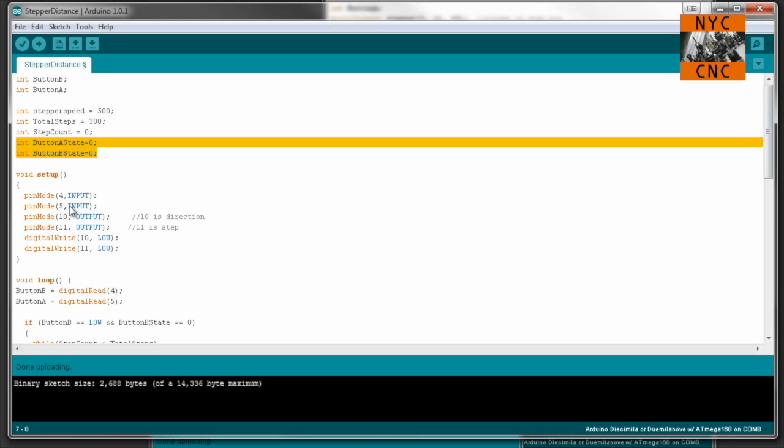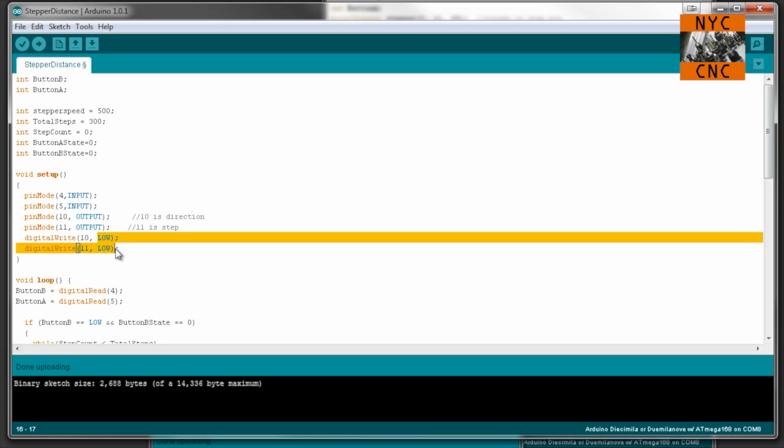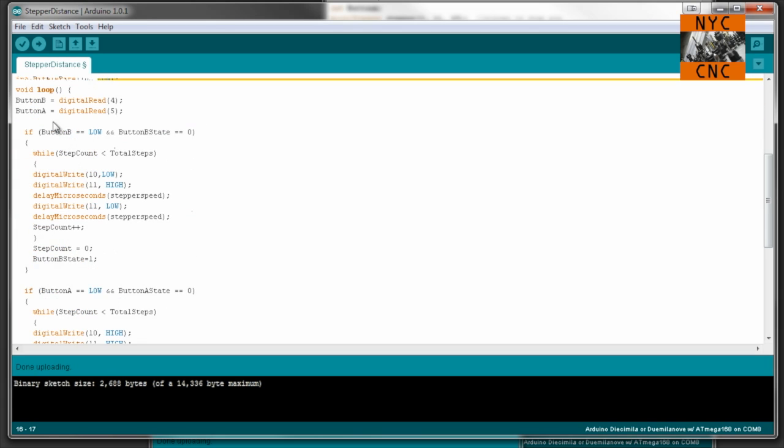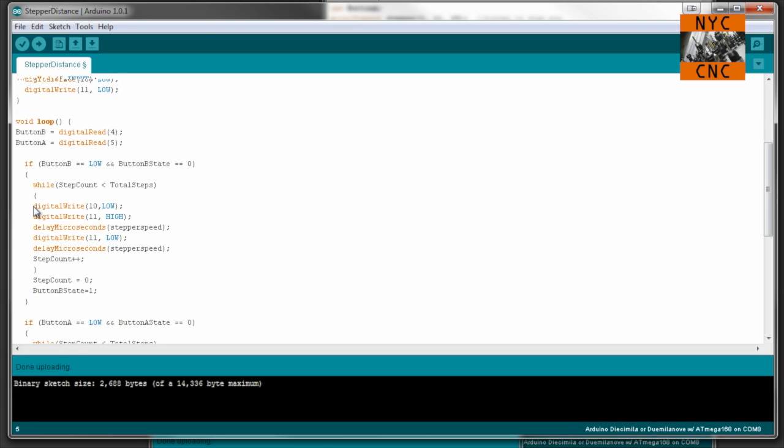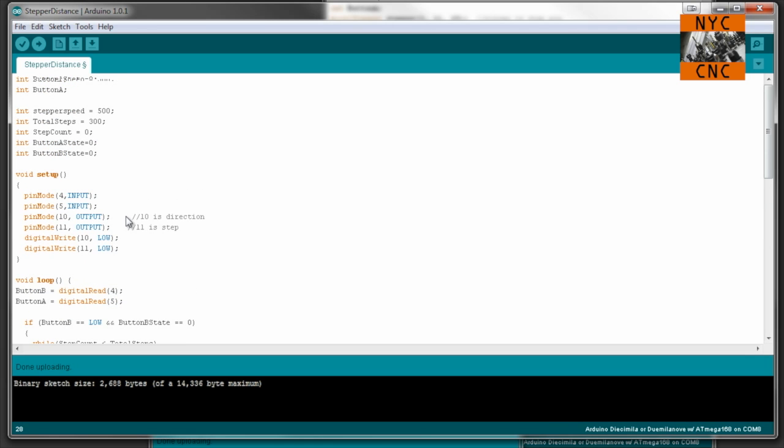Pin modes, four and five are inputs. That's because they're buttons. We're using them as inputs. 10 and 11, 10 is our direction, 11 is our step. They're outputs. And we start them low. So our Arduino loop, each time we loop through, we're reading the button A and B to see if the pin has been read and the button is low. These are low when they're pressed by the way. So when you push button B, it goes low. And if button state equals zero, I'll explain that in a second. What you do is you do a simple loop. So while the step count, which we start at zero, is less than total steps, which is 300. So that's the distance we are wanting to go. You alternate the pin 11 high and low. That's what steps the motor. You're literally just pulsing it high and low. Writing it 10 low at the beginning. Remember 10 is our direction. So that's telling it which way to go.